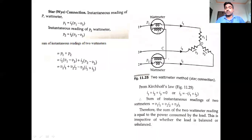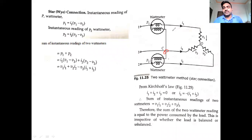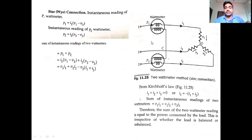The potential coil of wattmeter 1 is the voltage element; the potential coil of wattmeter 2 is the second voltage element. These two are connected together at a common point. The power of wattmeter 1 is P1 = I1·(V1 - V3), and P2 = I2·(V2 - V3).